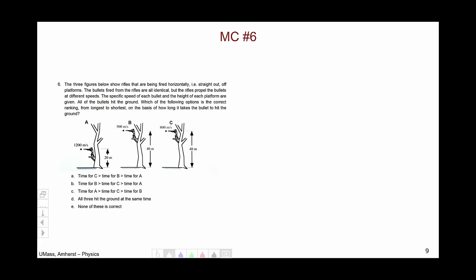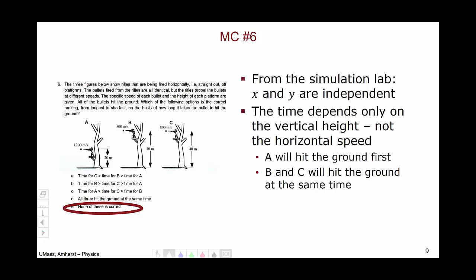The sixth multiple choice question involved bullets fired from a tree at various heights with various horizontal speeds. The correct answer was E—none of the other choices are correct. From the simulation lab, you should know that the x and y directions are independent, and the time of flight comes solely from looking at the y direction. The only relevant quantity was the vertical height, not the horizontal speed. Therefore, B and C, since they are fired from the same height, will hit the ground at the same time.